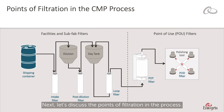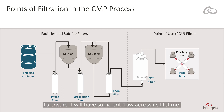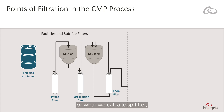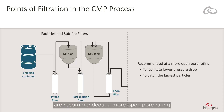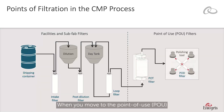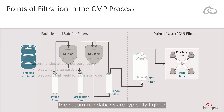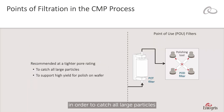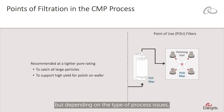Next, let's discuss the points of filtration in the process. When we discuss the pore rating of a filter, we usually are looking at where the filter is going to be used to ensure it will have sufficient flow across its lifetime. Typically, facilities in sub-fab filters, or what we call a loop filter, are recommended a more open pore rating to facilitate lower pressure drop and the ability to catch the largest particles. Depending on the slurry, these recommendations vary, as they tend to be based on process-specific requirements. When you move to the point of use or point of dispense, the recommendations are typically tighter in order to catch all large particles and support high yield for polish on wafer. Again, this will be process-specific, but depending on the type of process issues, we can help our customers find a solution that will work best for them.